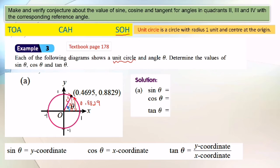The opposite side basically is the y-coordinate, which is 0.8829. So if I find sine theta based on the diagram, sine theta actually equals opposite 0.8829. So sine theta equals 0.8829.